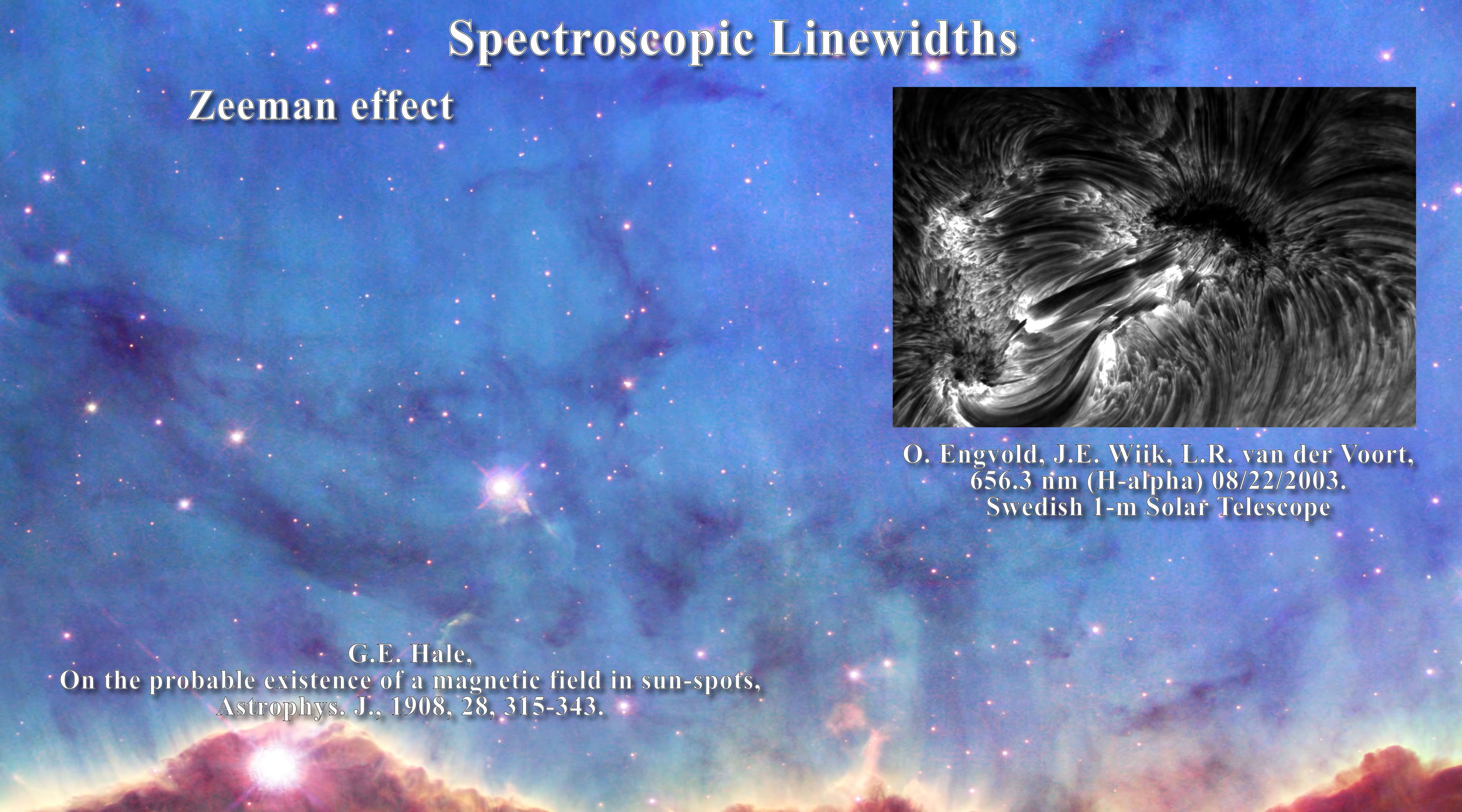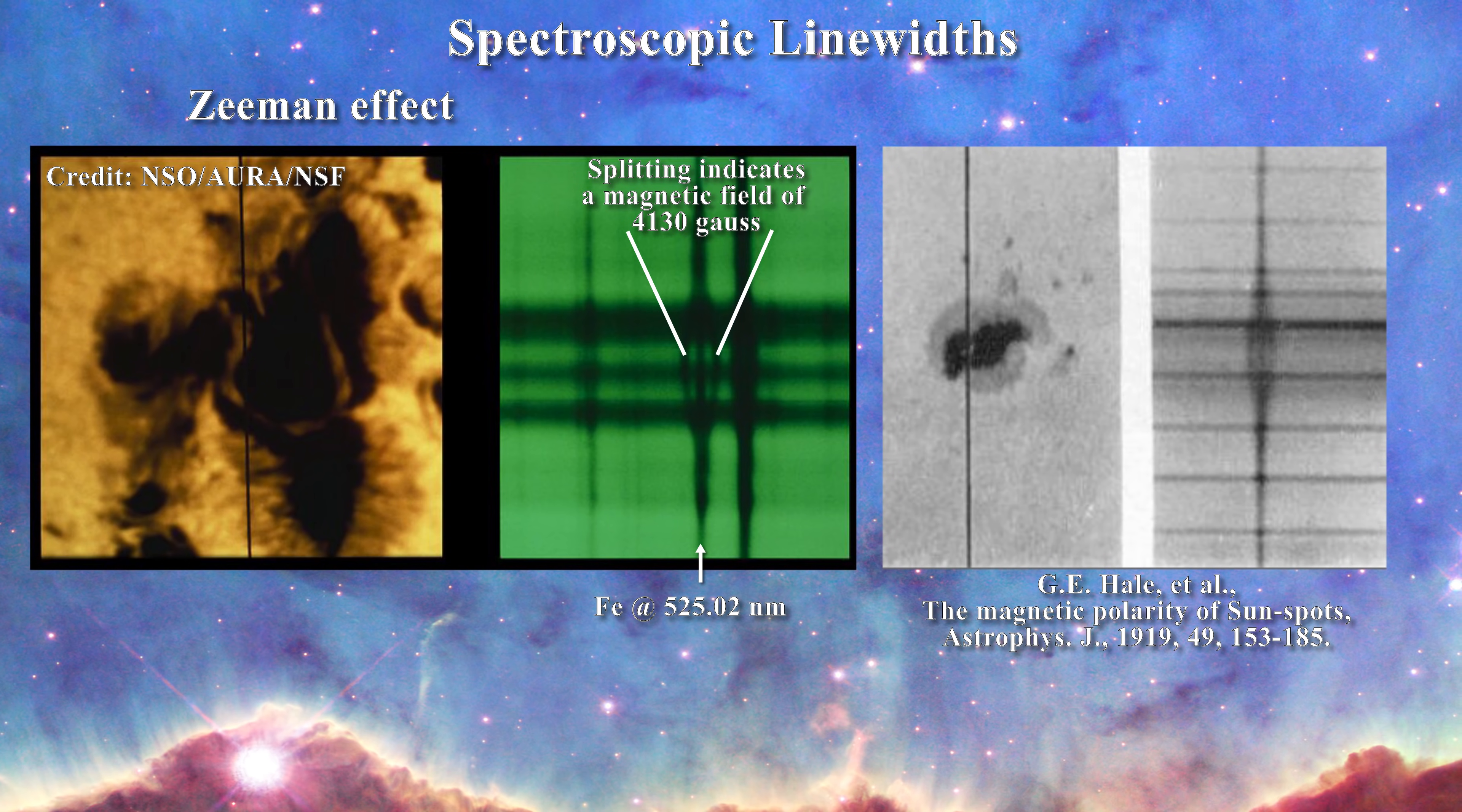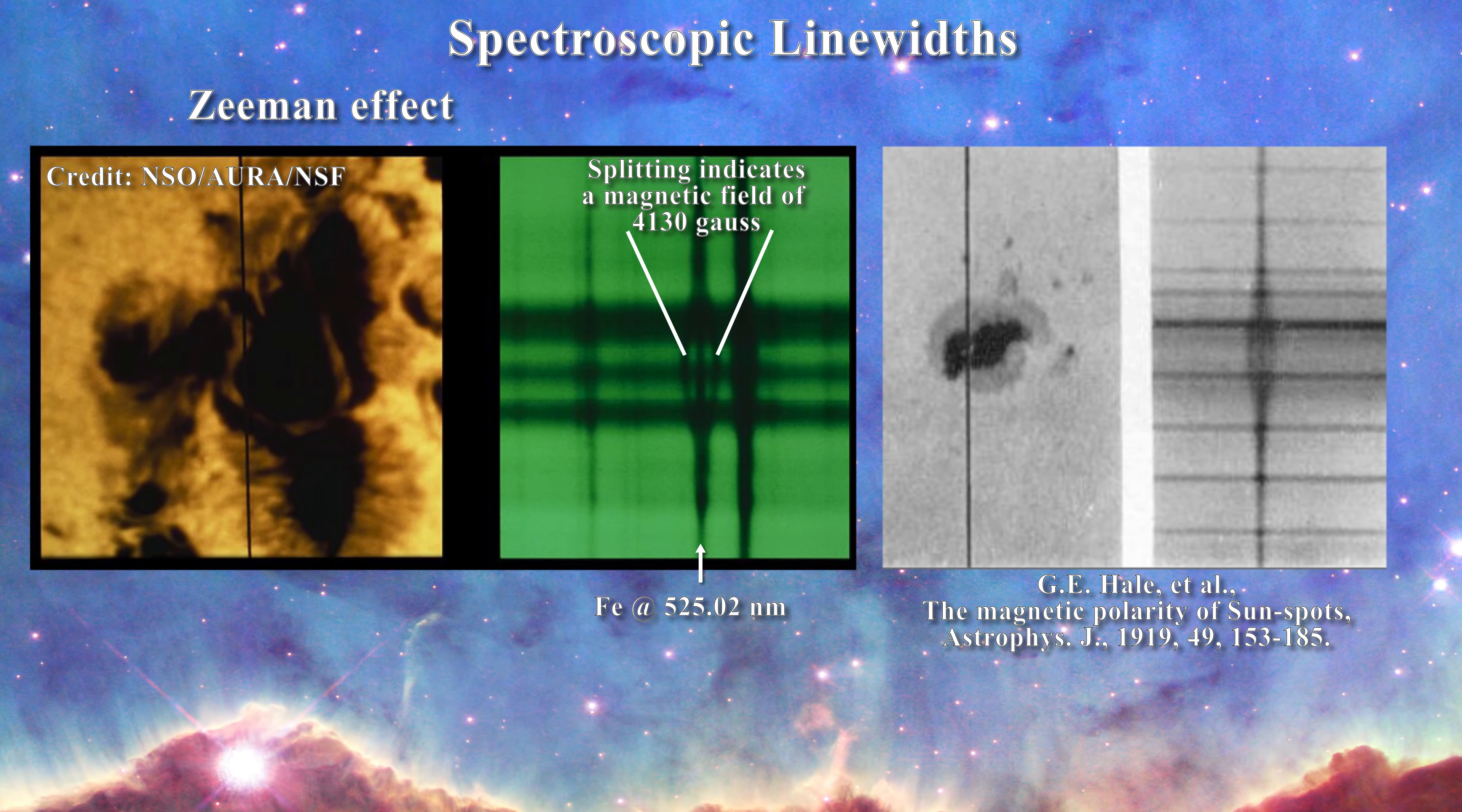However, the line splitting which he observed was not in hydrogen alpha, but principally in iron lines. Here is an illustration of what he obtained. One sees the iron line splitting as a result of magnetic fields in the sunspot. This was certainly one of the greatest discoveries in the history of astrophysics. The Zeeman effect had been seen on the sun.